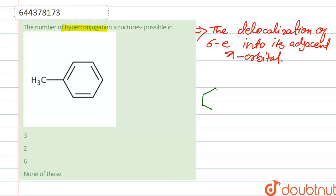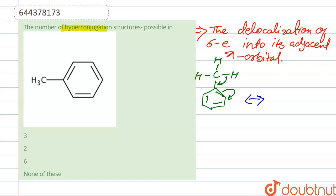Looking at the structure of toluene, we have a CH₃ group. We can write it as C with three hydrogens attached. This C–H bond breaks and shifts toward the ring, and the double bond shifts toward the adjacent carbon to form the first hyperconjugation structure.